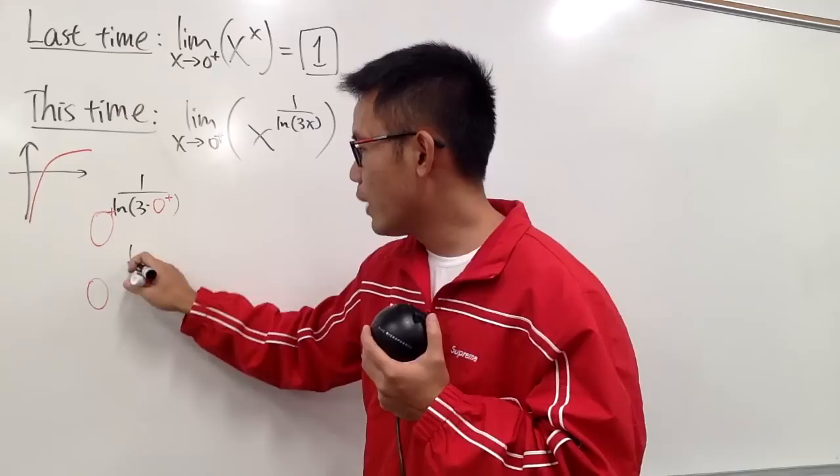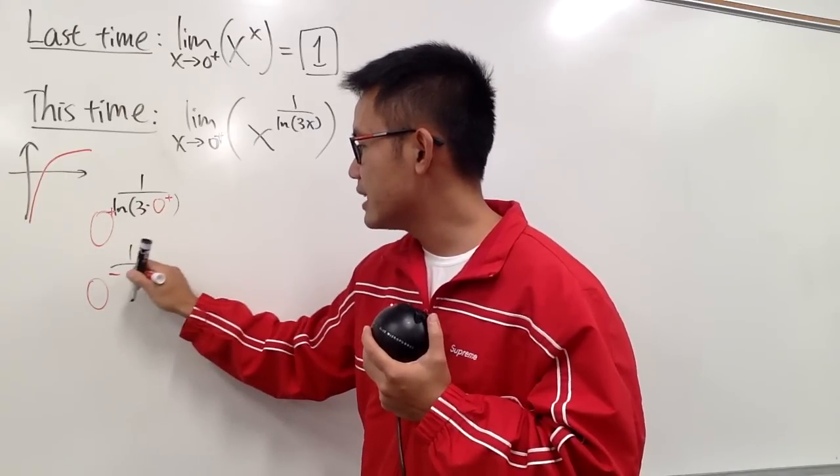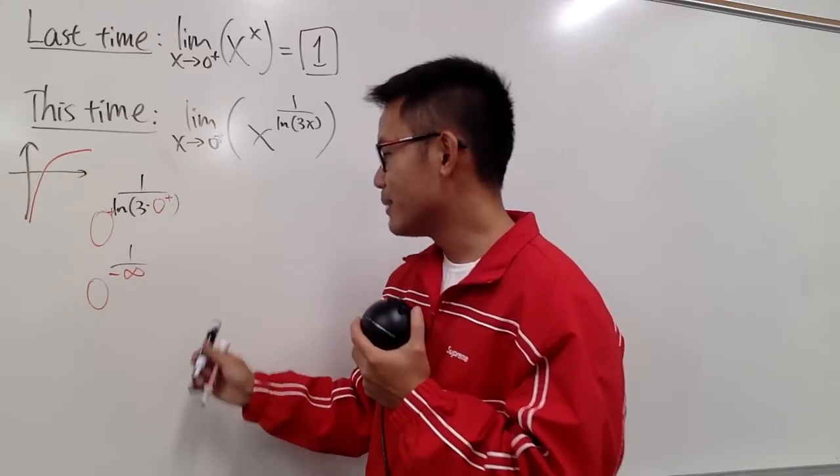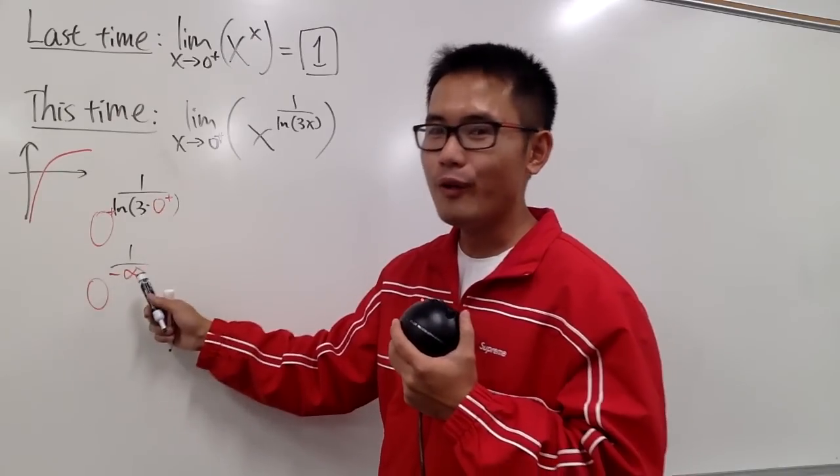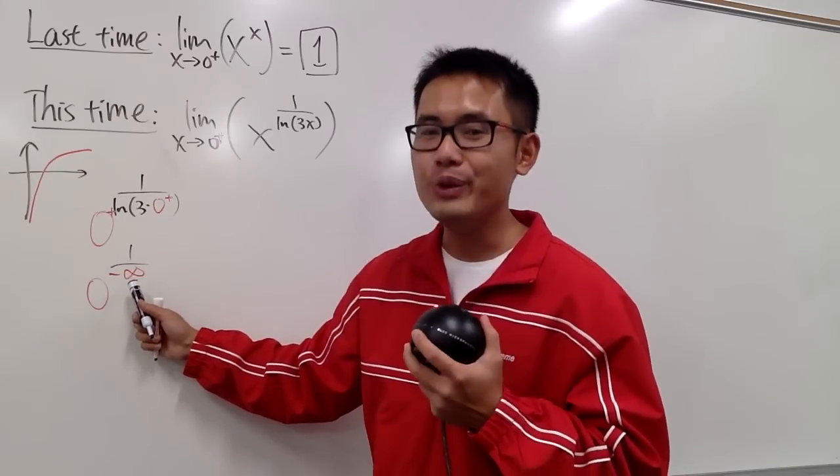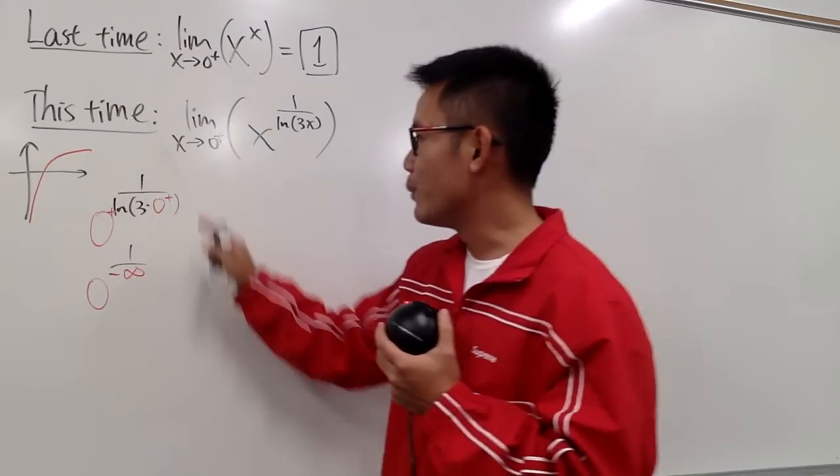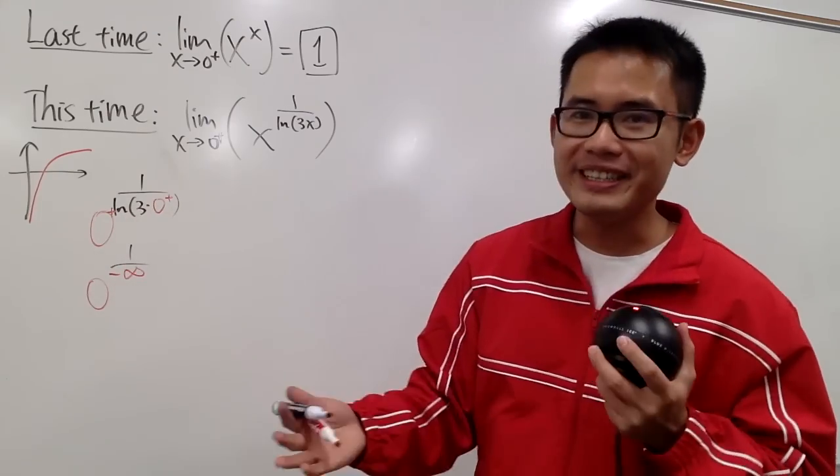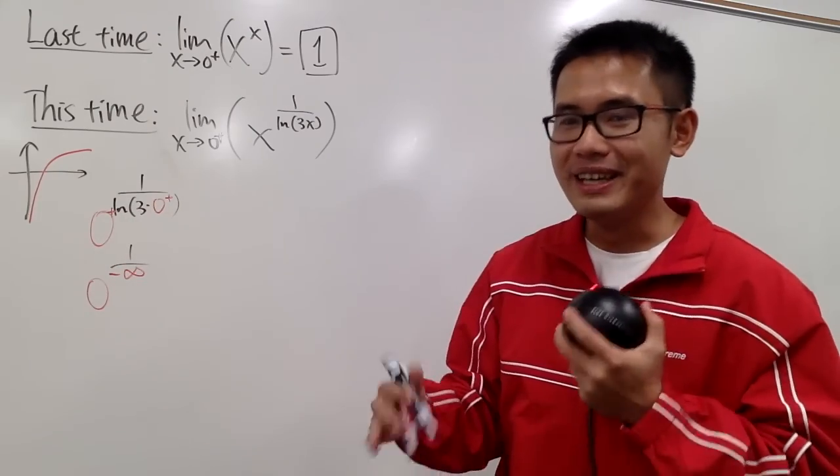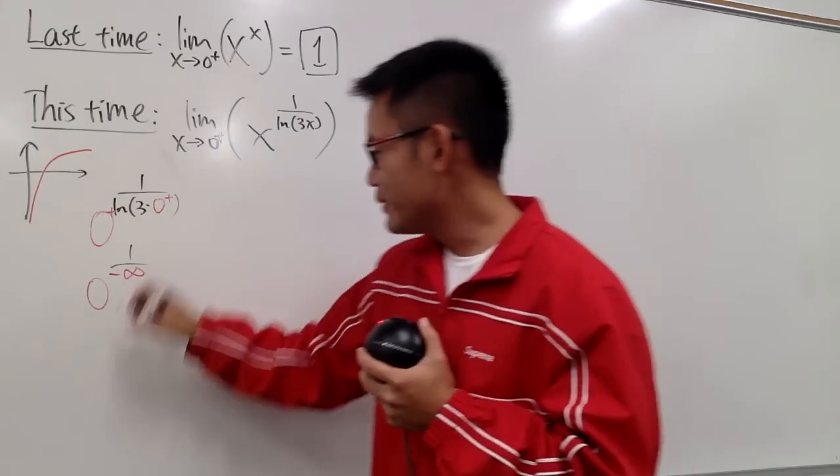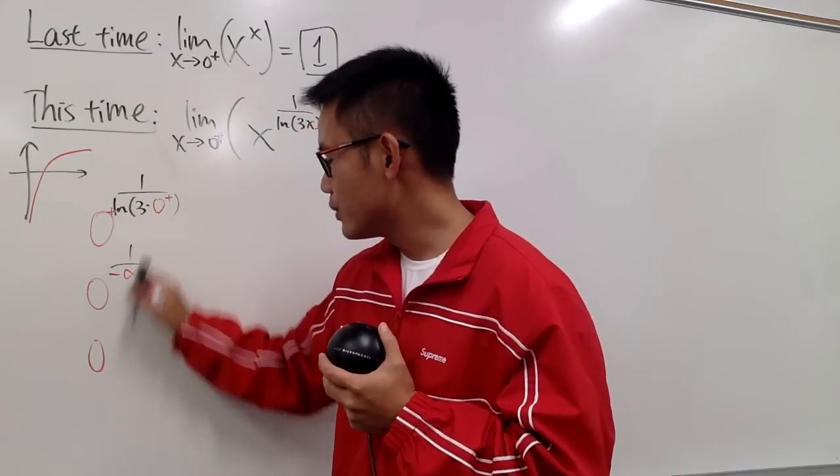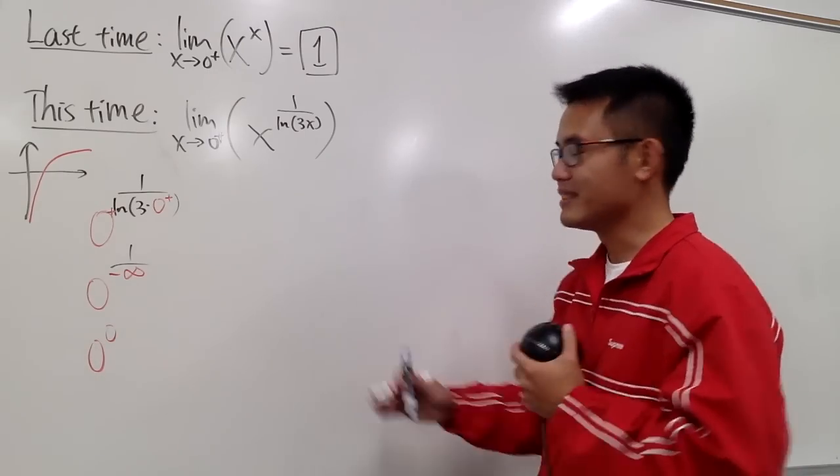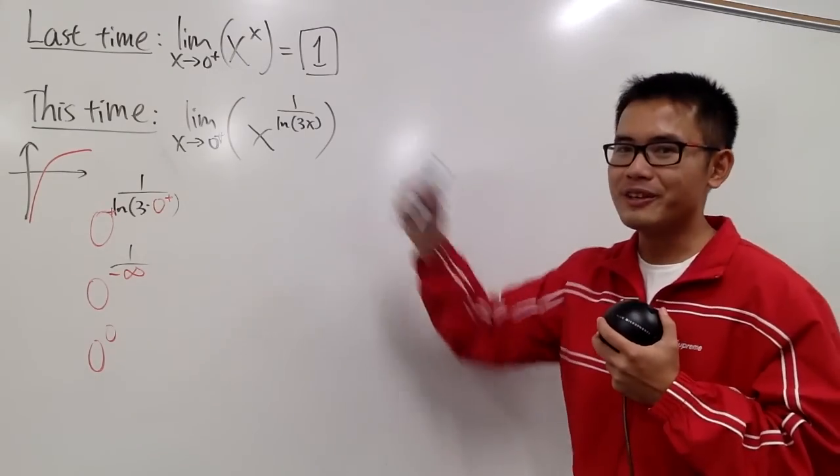So we will have 1 over, this is negative infinity. But anyway, it doesn't really matter that much because 1 over any kind of infinity, you get 0 for the power. But we need to have the 0 plus, because ln is not defined with negative numbers. We are not in complex analysis. But anyway, this is in fact a 0 to the 0 power situation. It's indeterminate. And now, let's try to figure out what's the limit right here.